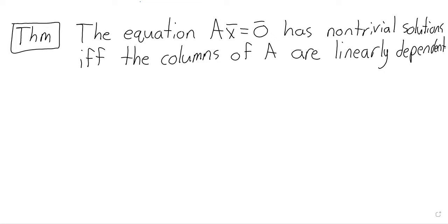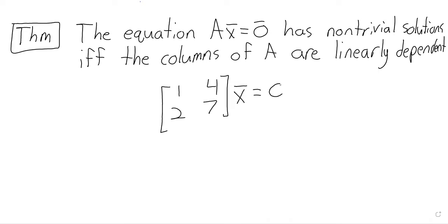We've talked about systems of equations, vector equations, and matrix equations being really the same thing, but sometimes it's easier to use one or the other. This connects last week's lecture about homogeneous systems with Tuesday's definition recast as a matrix equation. A homogeneous system has non-trivial solutions if there's a free variable; a vector equation has non-trivial solutions if the vectors are dependent.